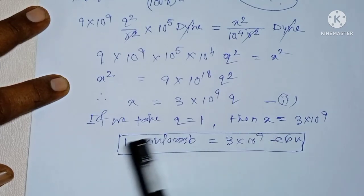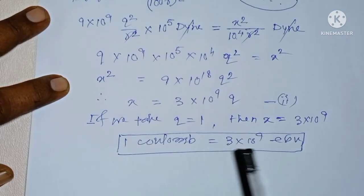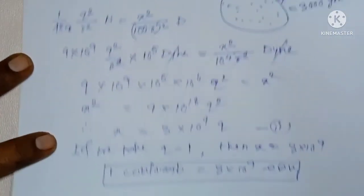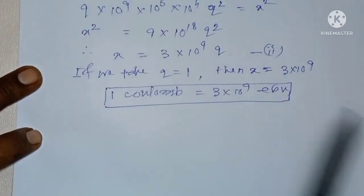That means, 1 Coulomb equals to 3 into 10 to the power 9 ESU. This is all for this lesson. If you have any question, then you may ask me in the comment section.